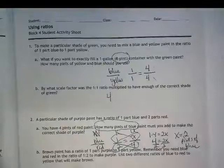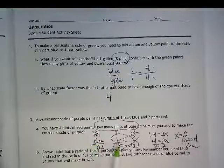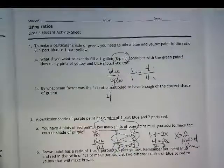Go ahead and use that information and try to set up a word ratio, a known ratio, and an unknown ratio for 2b.